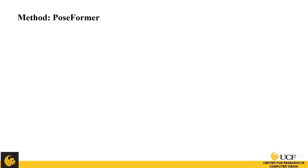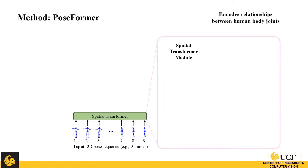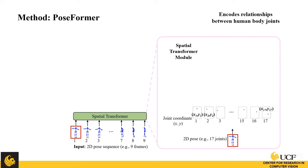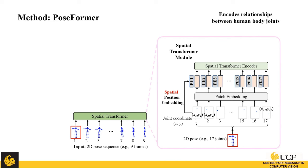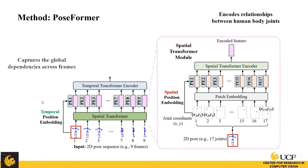Here is the architecture of our PoseFormer. After extraction by the 2D pose detector, we have the 2D pose sequence. We apply a spatial transformer that encodes relationships between human body joints, treating each frame individually and each joint as a patch. After patch embedding with spatial positional embedding, a spatial transformer encoder returns encoded features for each frame. After getting embedding features of all frames, we add temporal positional embedding and apply a temporal transformer encoder to capture global dependencies across all frames. Finally, a regression head returns the 3D pose for the center frame.